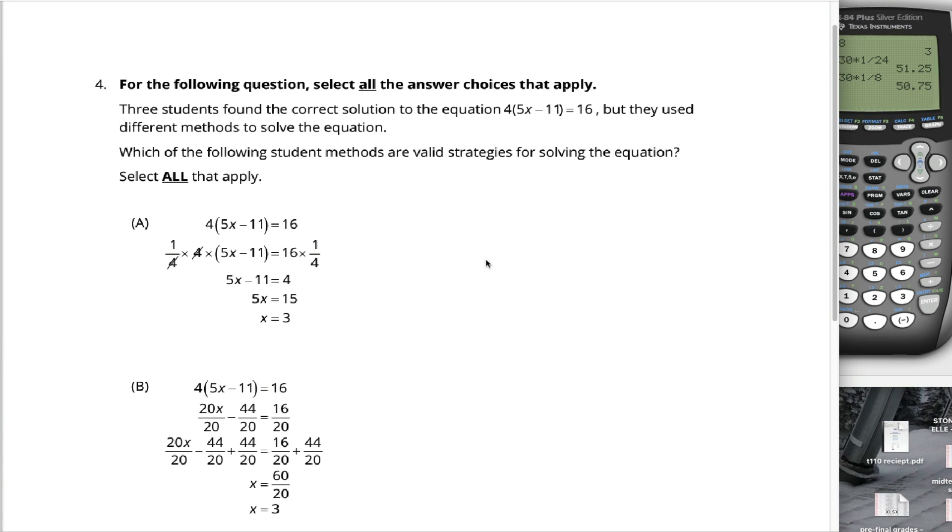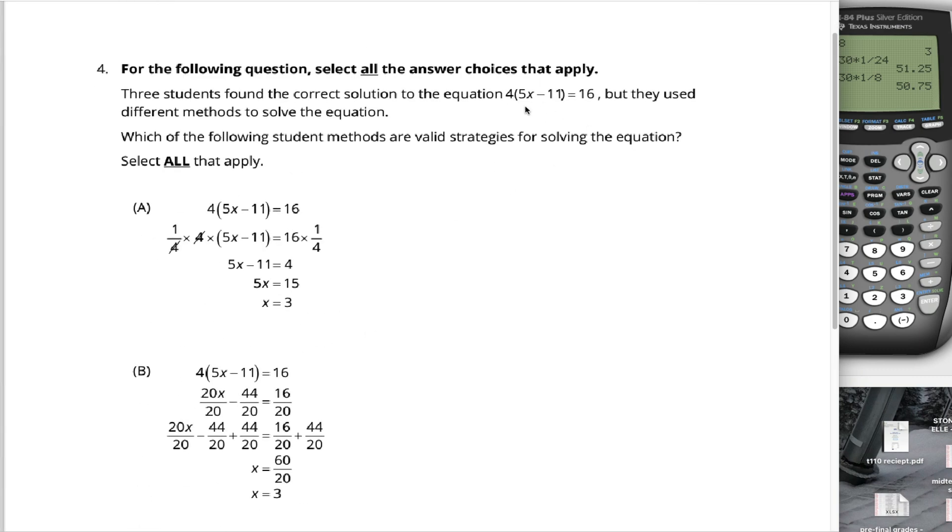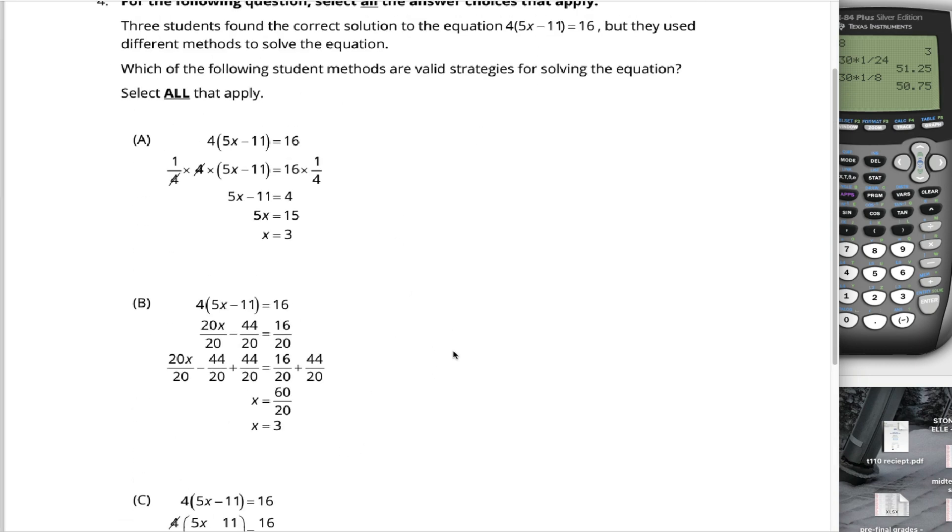All right, number four of the practice problems on the Praxis 5165 test. I kind of hate this problem. The idea is there are these three hypothetical students, A, B, and C, who are solving this equation, and they're all getting the right answer, x equals 3. But what you're supposed to do is go through and check their work and see, did any of them get the right answer coincidentally?